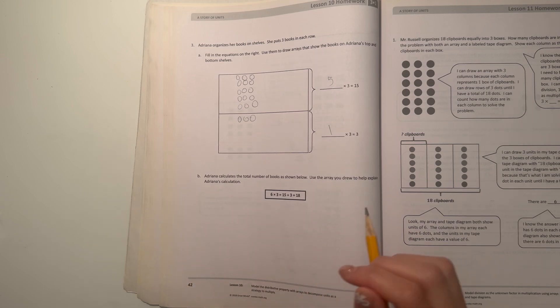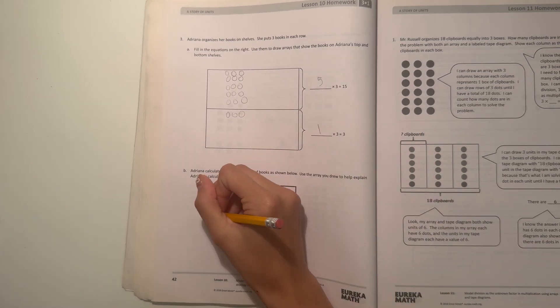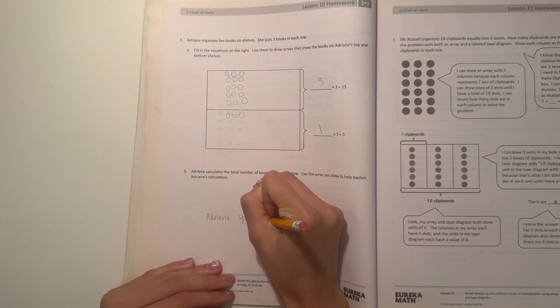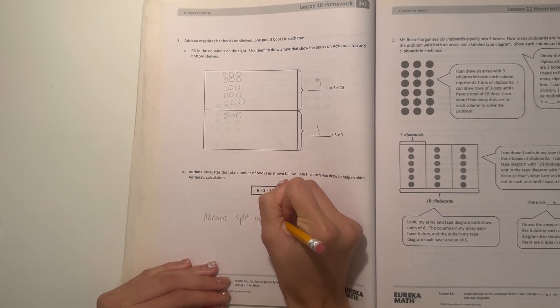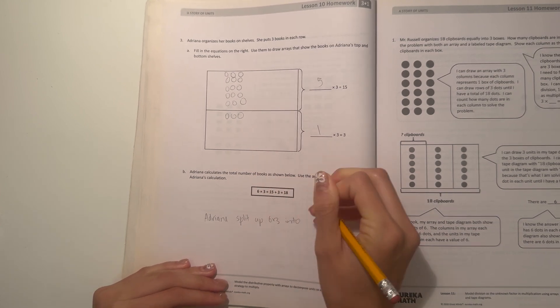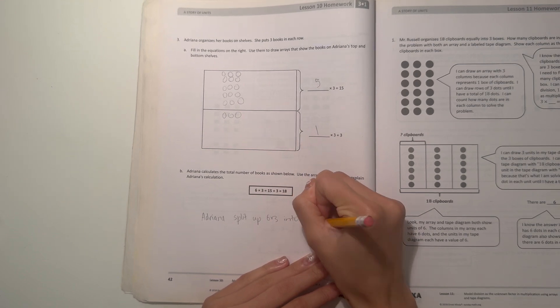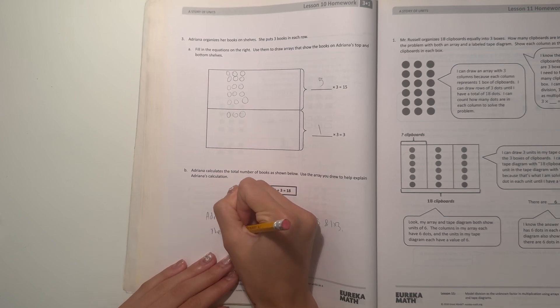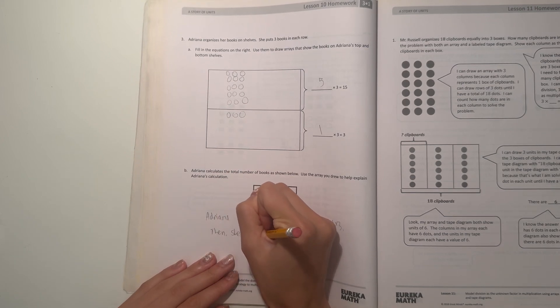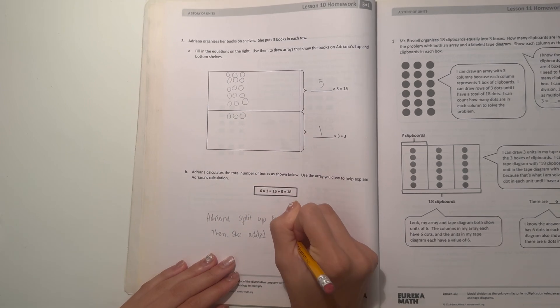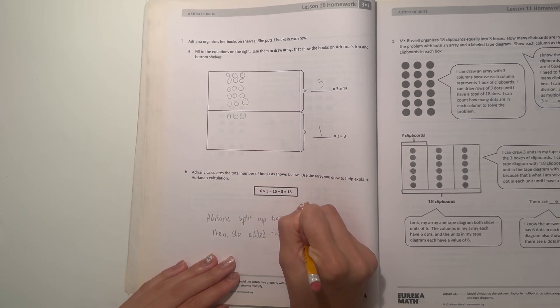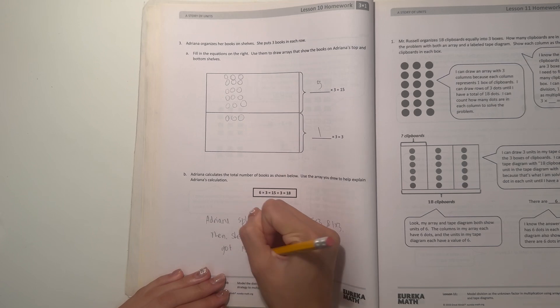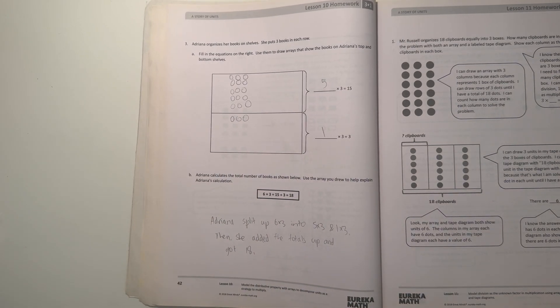So what Adriana did was Adriana separated it into five times three and one times three. So then she added the total up and got eighteen. So that was what Adriana's calculation was like.